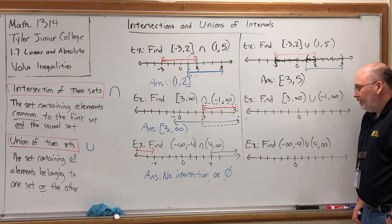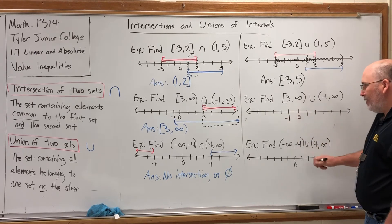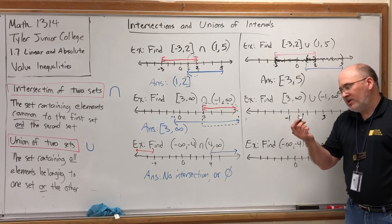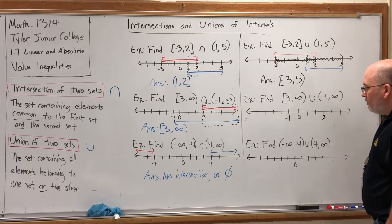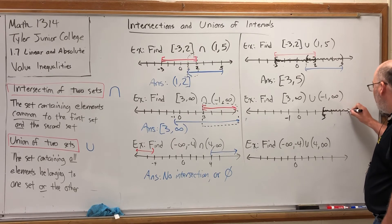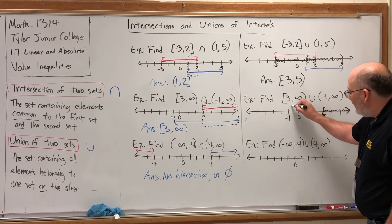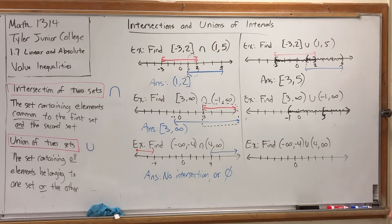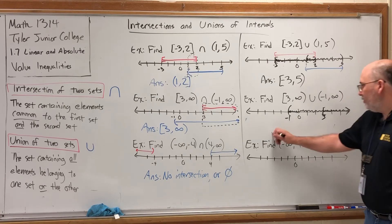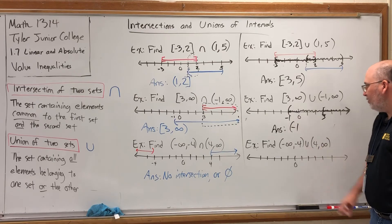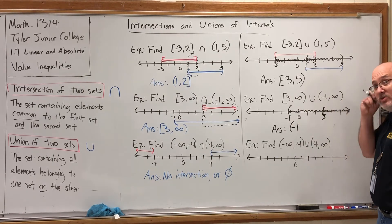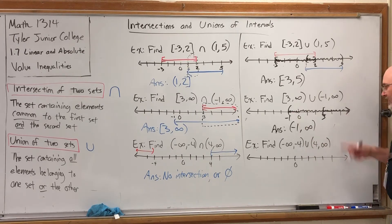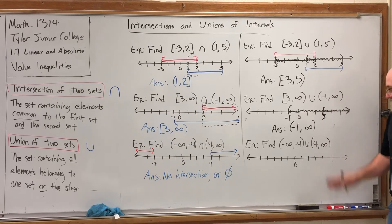For the second union, we copy the number lines over. The first interval started at 3 with a bracket and went to the right forever. The second interval started at negative 1 with a parenthesis and went to the right forever. Together, where does the shaded portion start? It starts at negative 1, which is not included — negative 1 belongs to neither original interval — and goes all the way to infinity. There's no need to pause at the 3, because once you join them together, 3 is no longer the end of anything; it's in the middle of the union. The result is (-1, ∞).